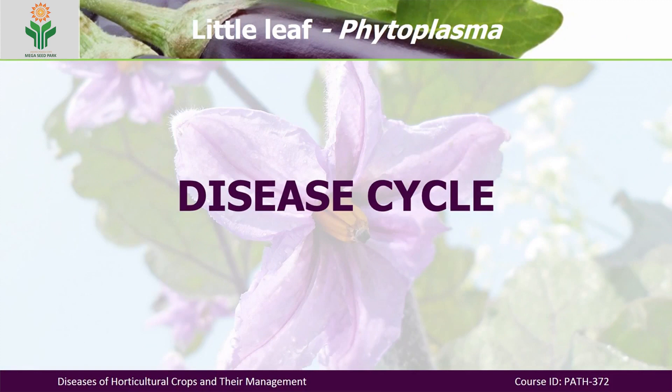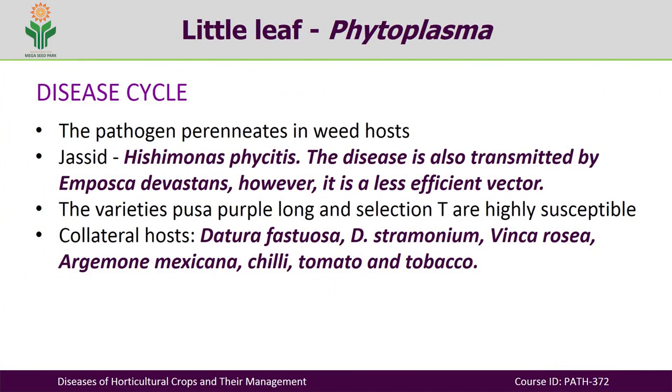These symptoms are well depicted in the photographs shown here. Now, how is this disease transmitted? The pathogen perennates in weeds — weeds are very common in vegetable crops, and this pathogen perennates in some of those weed hosts. The transmitters are jassids.